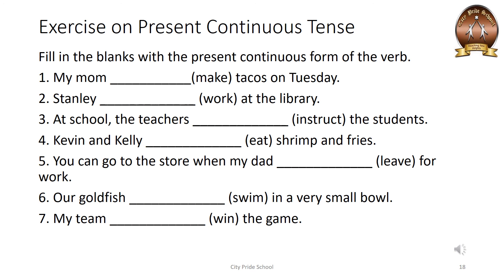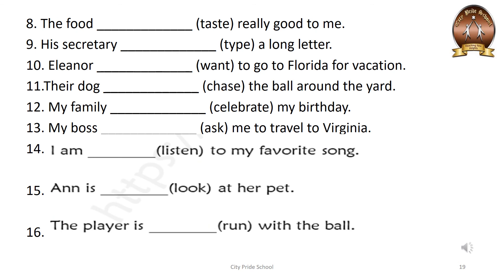I hope you are getting how we use the helping verbs. Let's see a few more examples. 'The food dash taste really good to me.' Answer: 'The food is tasting really good to me.' Next: 'His secretary dash a long letter.' The verb given is 'type'. Answer: 'His secretary is typing a long letter.' Secretary is a singular noun, so we use 'is', with 'type' as the main verb in ing form. Every sentence uses: helping verb, main verb, and ing form.